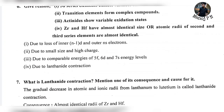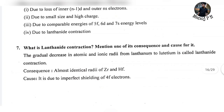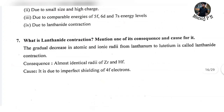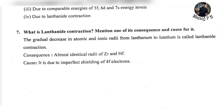Zirconium and hafnium are almost identical in size — that is, the atomic radii of 2nd and 3rd series elements are almost identical — because of lanthanide contraction. Lanthanide contraction is the gradual decrease in atomic and ionic radii from lanthanum to lutetium. Its consequence is the almost identical radii of Zr and Hf, and it is due to imperfect shielding by 4F electrons.